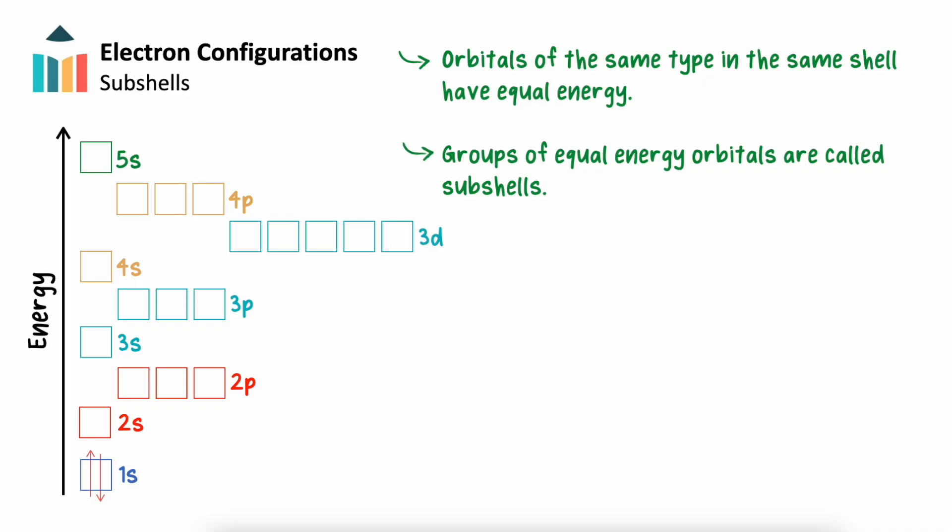Let's count the number of orbitals in each shell. Shell 1 only contains the 1S orbital. Shell 2 contains a 2S orbital and a 2P subshell with 3 P orbitals. This gives shell 2 a total of 4 orbitals. Shell 3 contains a 3S orbital, 3 3P orbitals, and 5 3D orbitals, giving 9 orbitals in total. The pattern we see here shows that the number of orbitals within a shell is equal to the shell number N squared.